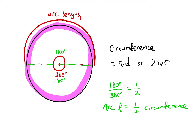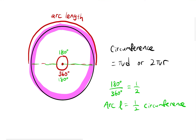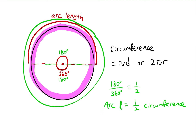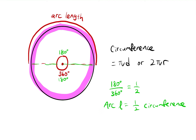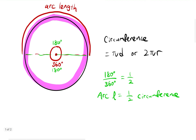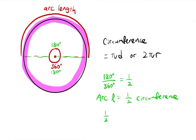That's starting to make sense now, because the circumference is the whole thing. So therefore, my formula will actually just be one half times 2πr, which is just πr.